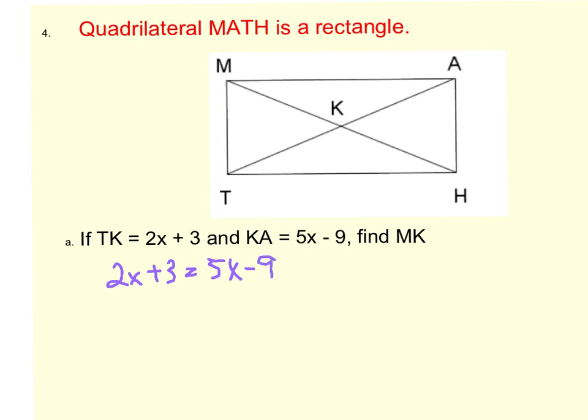I'm going to subtract 2x on both sides and add 9 on both sides, and when we divide both sides by 3, we get x equals 4.